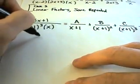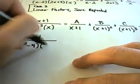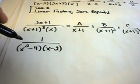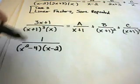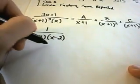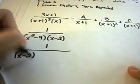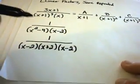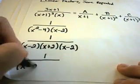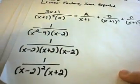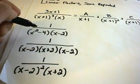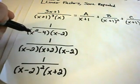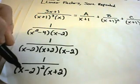Let's do one more: 1 over (x²−4)(x−2). It looks like it may not be linear factors, but you have to be careful — x²−4 factors as (x−2)(x+2). So the denominator becomes (x−2)² times (x+2), which means we have a repeated linear factor. With partial fractions you must always check: is the numerator degree smaller than the denominator degree, and is the denominator completely factored? If not, you need to factor it first.